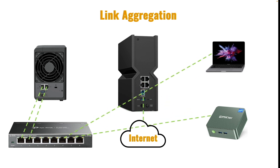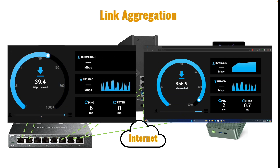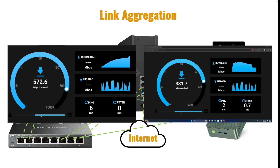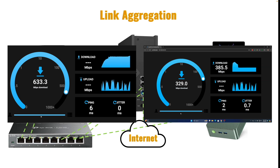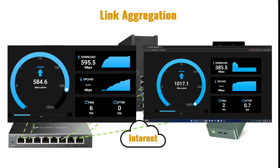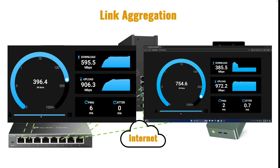I'll move both of my client computers to the switch as well and add an uplink network cable from the router to the switch for DHCP and internet access. Running another speed test from both client systems at the same time, it looks like the download task shared a LAN port on the NAS, whereas the upload appears to be getting close to a gigabit of bandwidth for each client, indicating that both LAN ports on the NAS are being utilized.